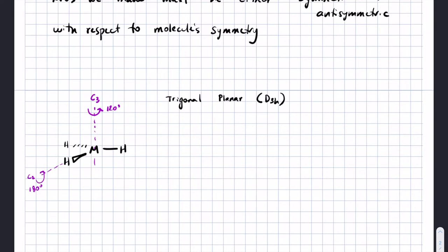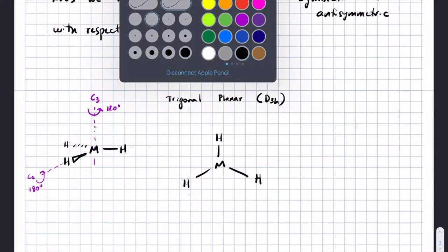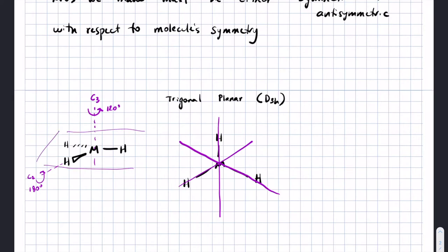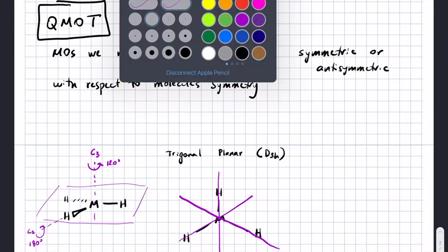Looking from above, there are also mirror planes of symmetry — one for each bond direction — where everything on one side is a reflection of what's on the other. You also have a mirror plane that coincides with all the bonds in the molecule. Any molecular orbital we make for this MH3 molecule would need to be either symmetric or anti-symmetric with respect to the molecule's symmetry. Symmetric means the sign of the wave function doesn't change; anti-symmetric means the wave function sign changes.